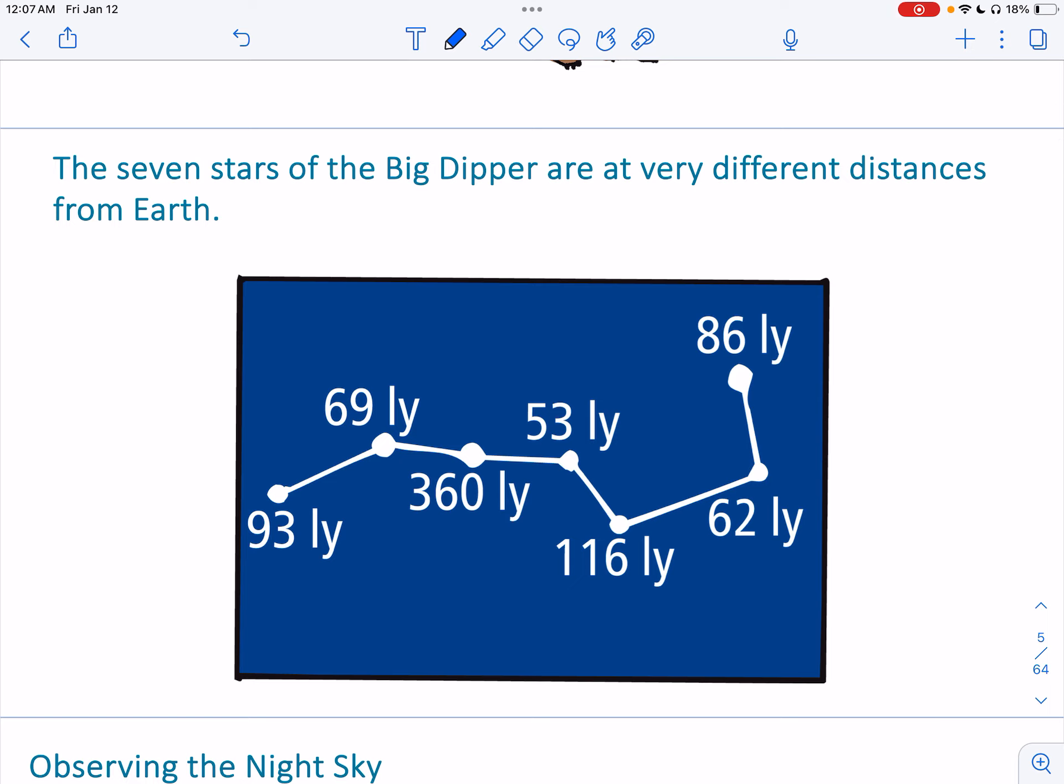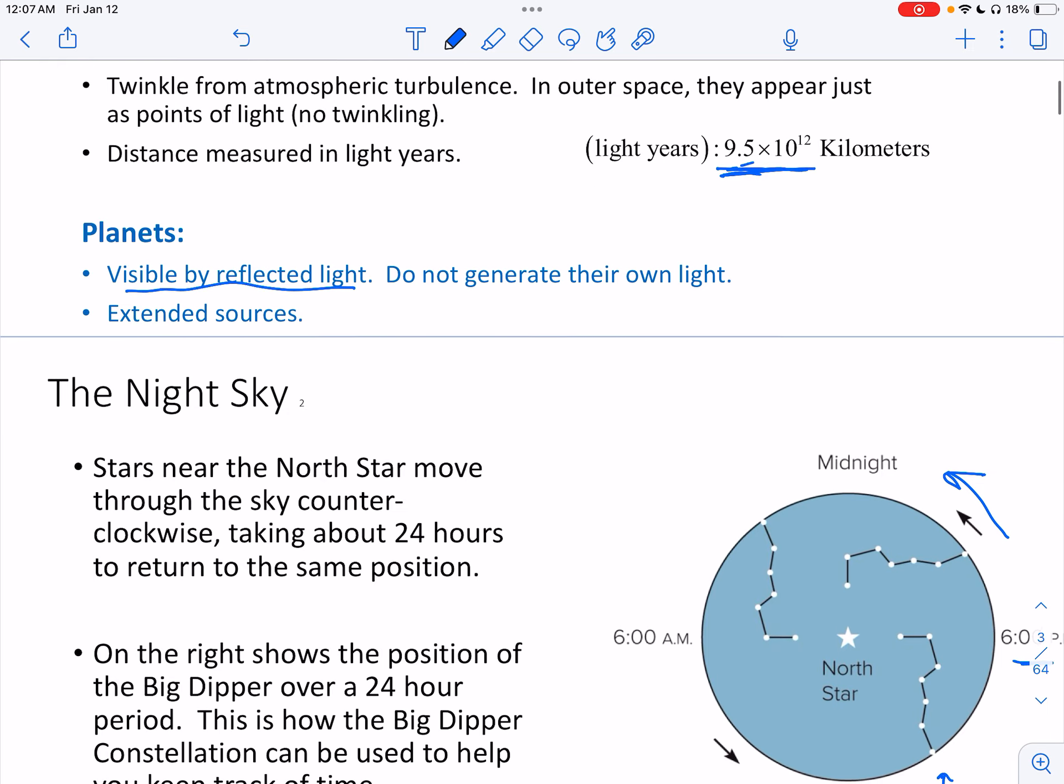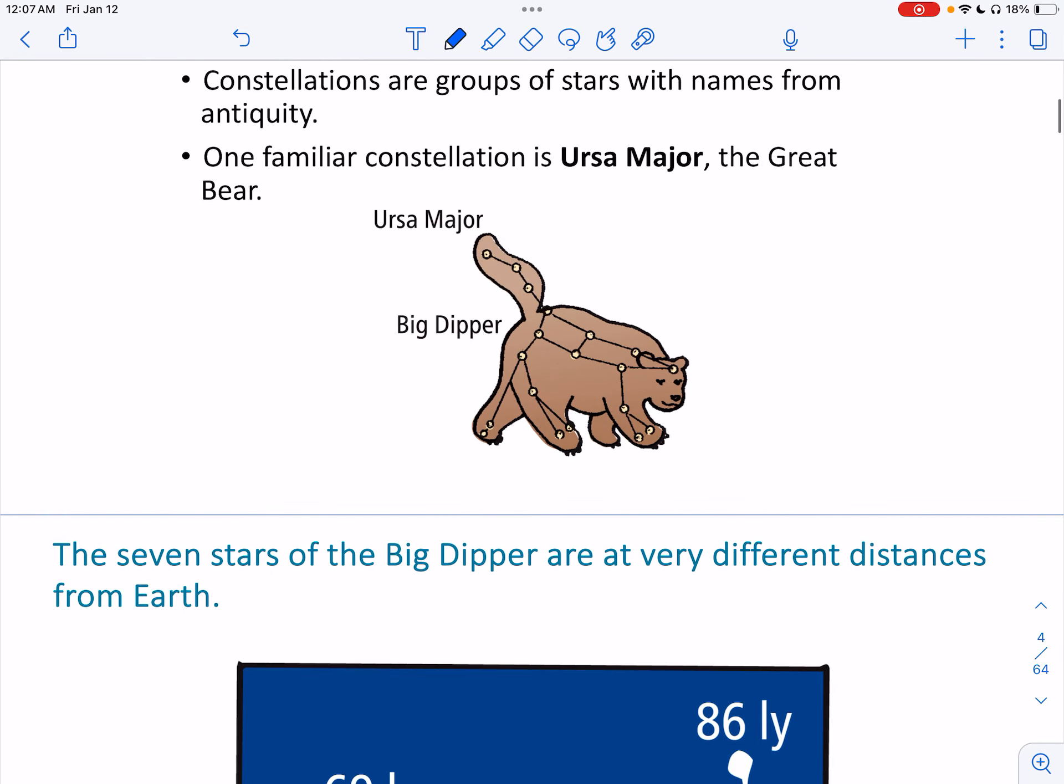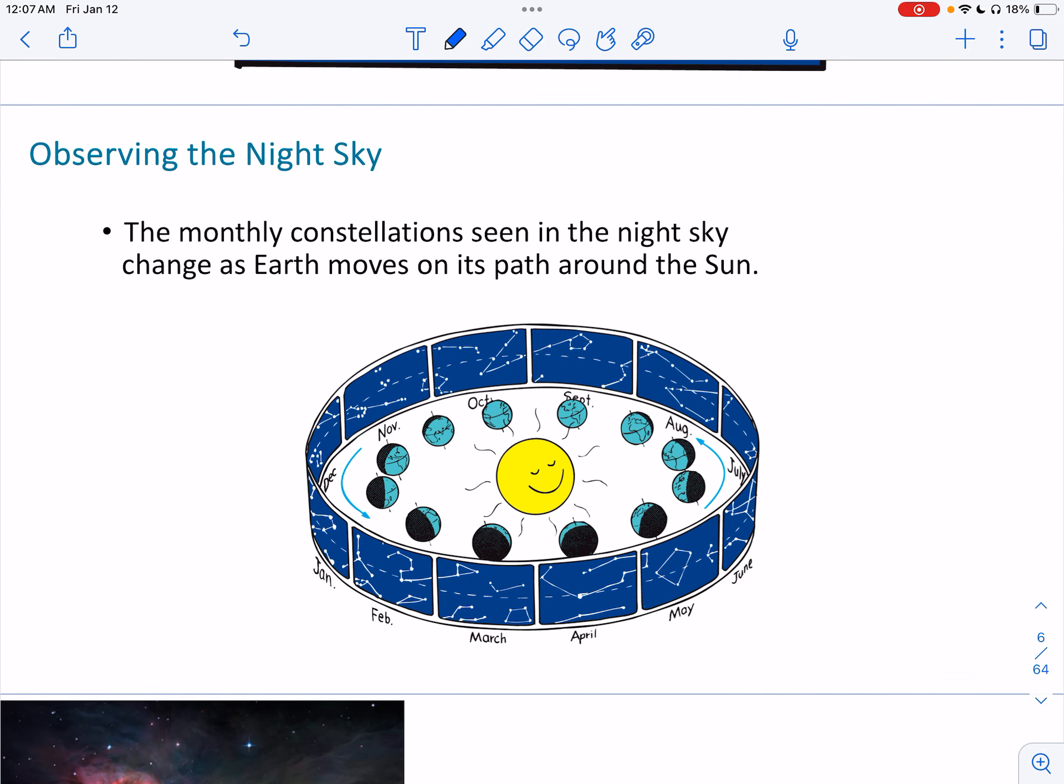The seven different stars of the big dipper actually very different distances from the earth. One is 93 light years. The other one is 69 light years. Another one is 360. Another is 53. Another one is 116 light years. Again, one single light year, one single light year. I'm going to scroll back is 9.5 times 10 to the 12 kilometers.